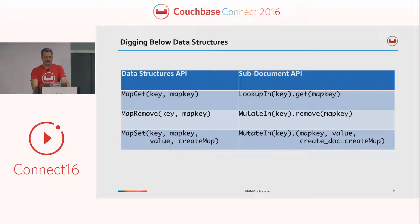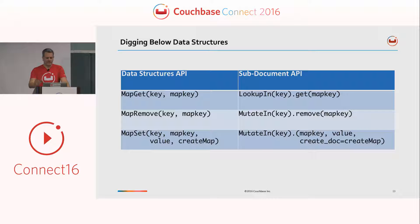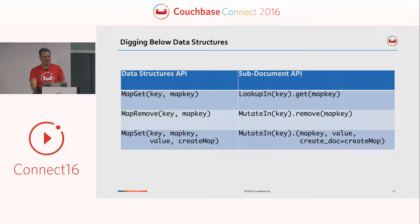The data structures API actually sits on top of our sub-document API. If we didn't have the sub-document capabilities in the server, we couldn't do a lot of what we're doing on the data structures side. These are just three examples from the map data type and how they work in the sub-document API. We've tried to simplify things so that if all you care about is getting access to an array, the data structures is enough for you. But if you want to get a little lower level, you can do a lot more with the sub-document API.